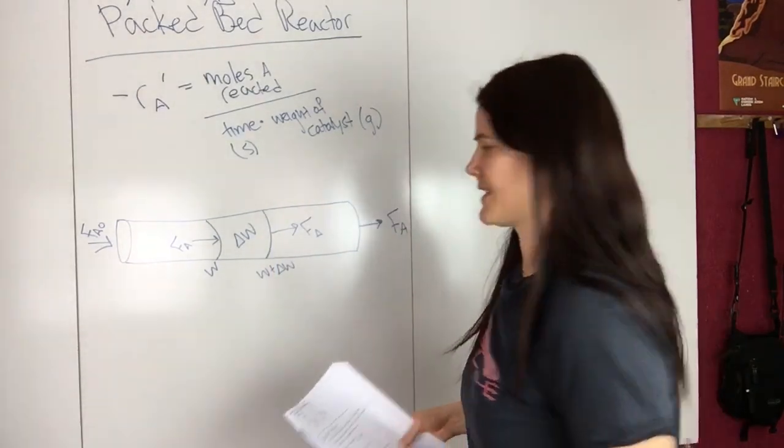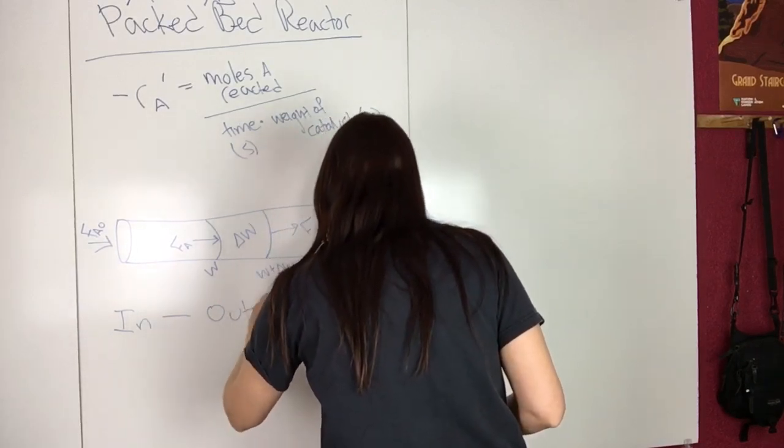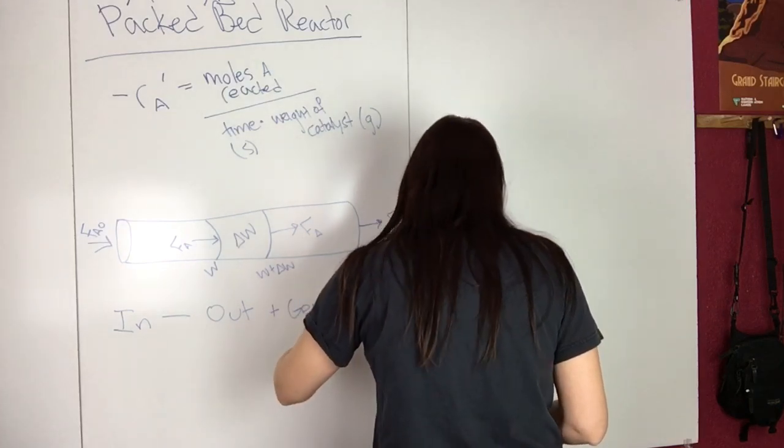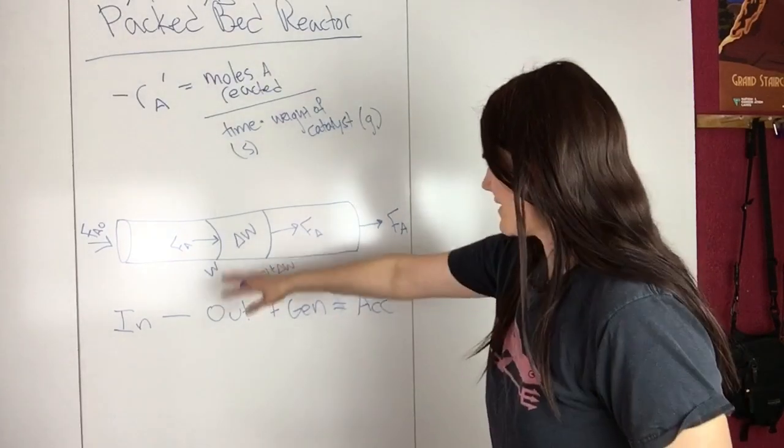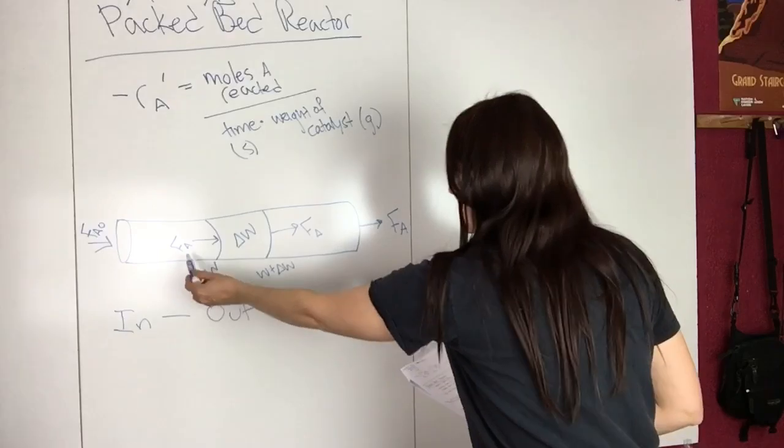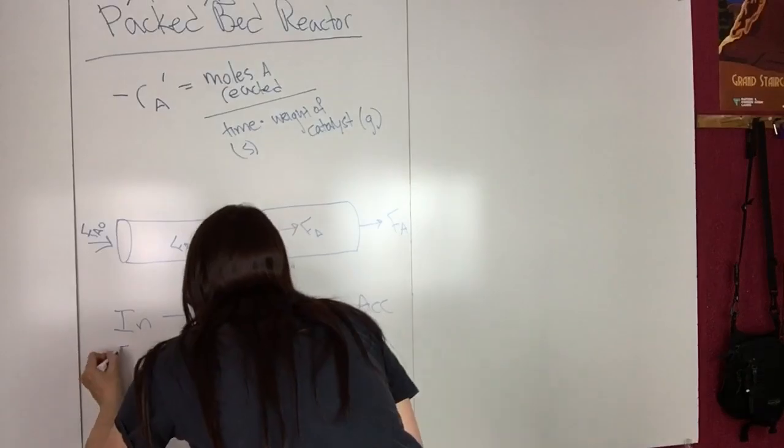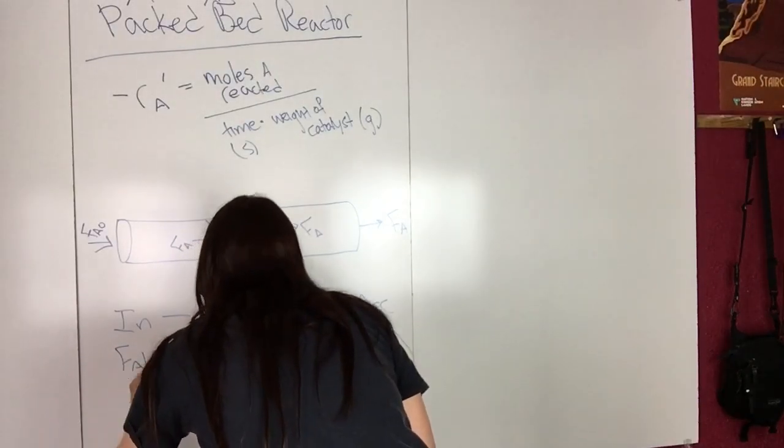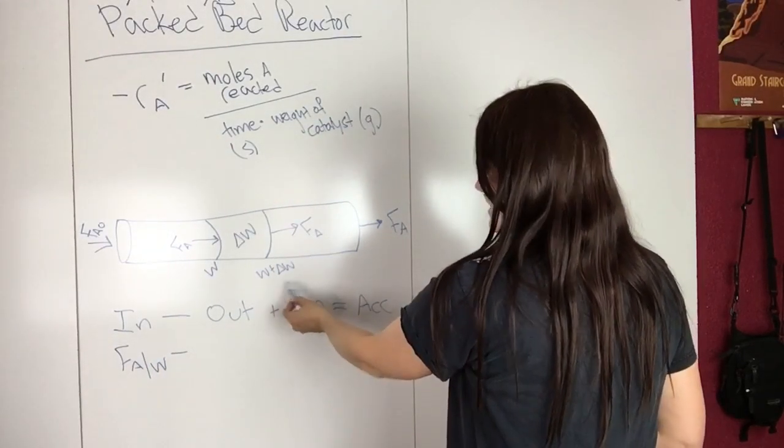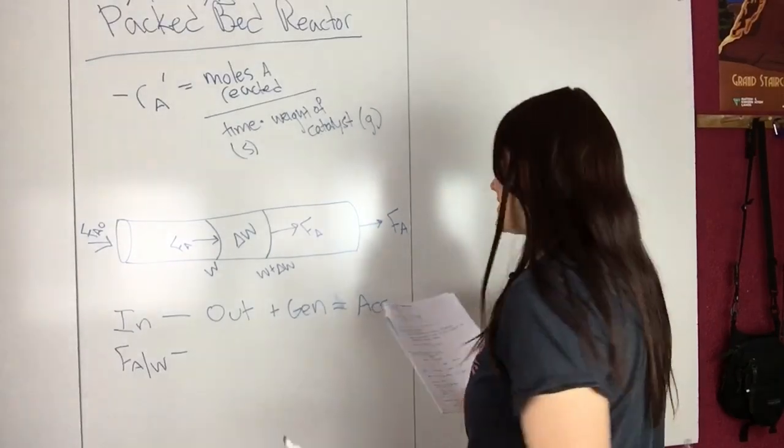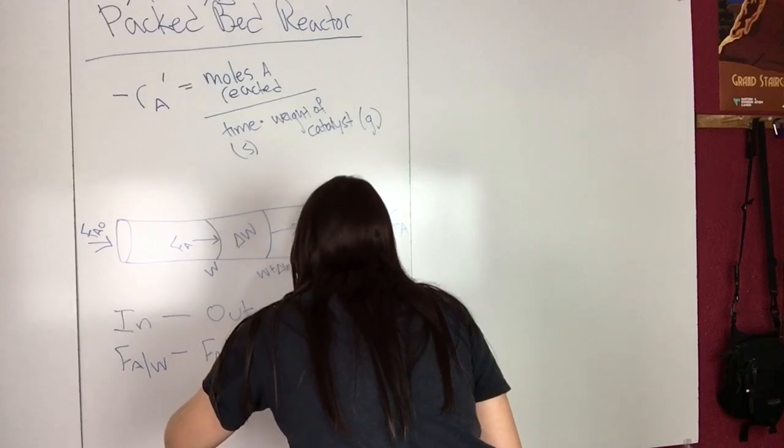So then if we do a balance on this, we have in minus out plus generation equals accumulation. So then just writing these in, we know that we have some molar flow rate in at this weight, so F_A at W minus, and then we have molar flow rate out at this weight here, which is the W plus a change in weight, so F_A at W plus delta W.